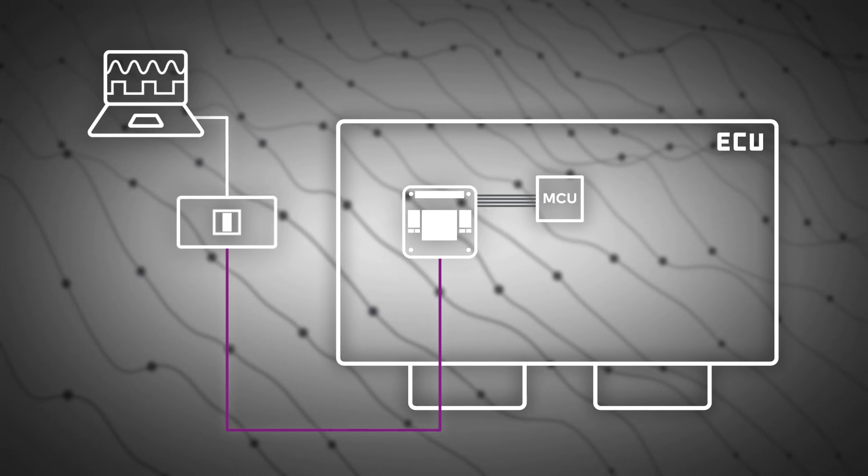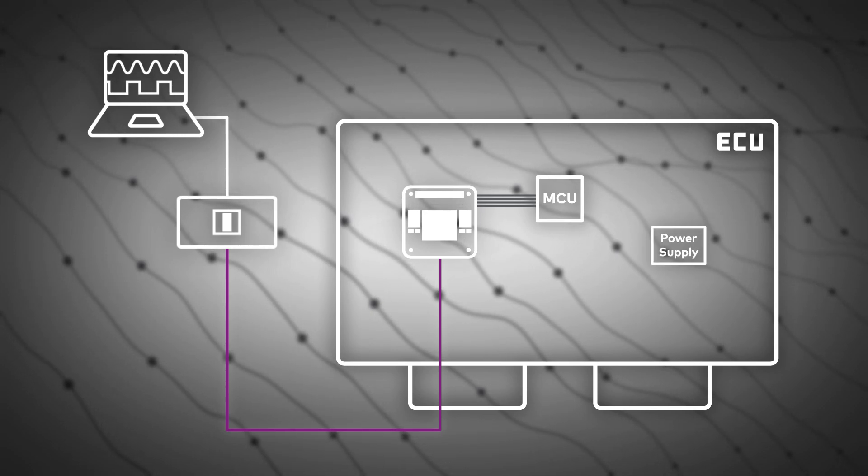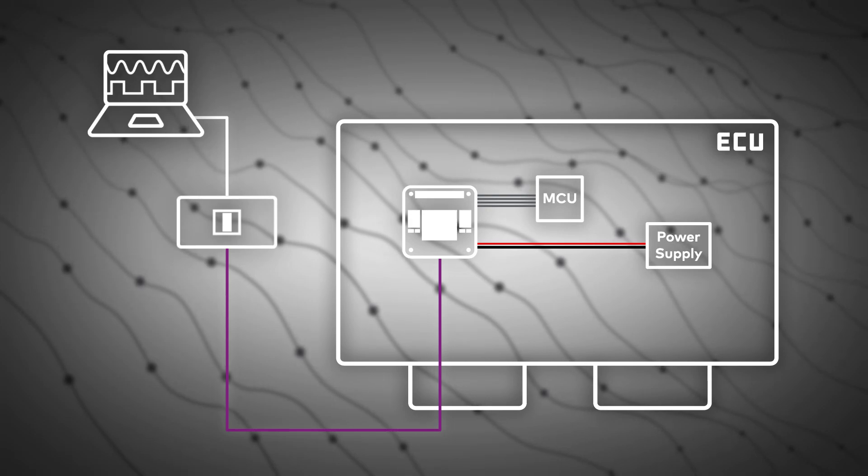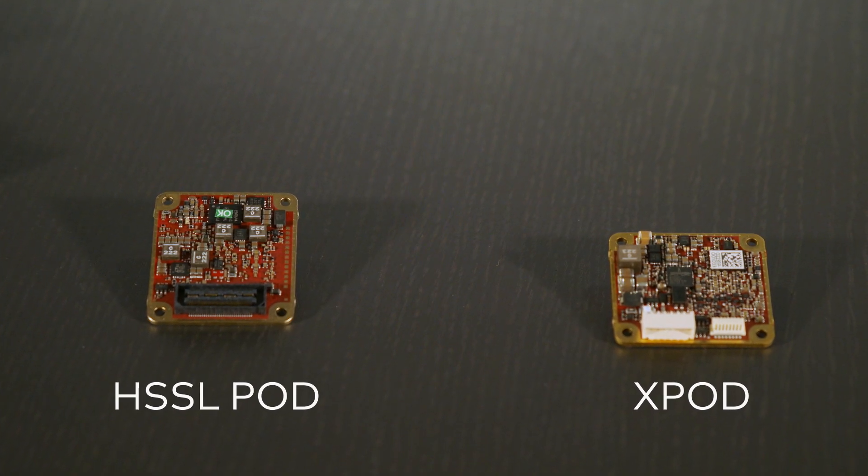For the uplink, just two wires are required, ideally using two spare pins of the vehicle connector. It is supplied through the ECU with an unregulated voltage. The X-POD is about the size of the HSSL POD, about 12 square centimeters.